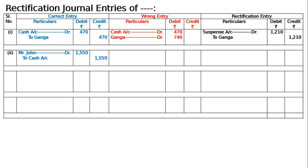Mr. Jones debited to cash account 1550 — in Jones account we should write down 550 more. Hence the rectification entry is: Mr. Jones debited 550 to suspense account 550, because all other amounts and items are correct. This rectifies the undercast of 550 in Jones debit balance.